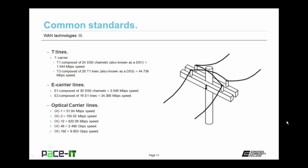It's becoming more common to see OC12s — with those, you get up to 622.08 megabits per second. If you want gigabit-type speed, you might consider leasing an OC48, which gives you up to 2.488 gigabits per second in bandwidth. Currently at the top of the line is the OC192, giving you up to 9.953 gigabits per second — essentially 10 gigabits per second worth of bandwidth.